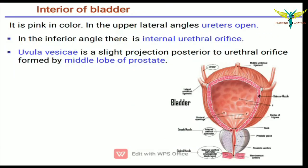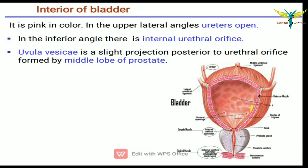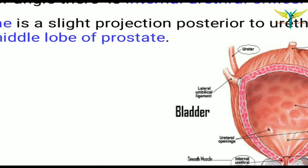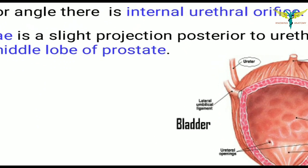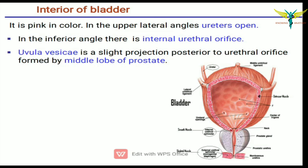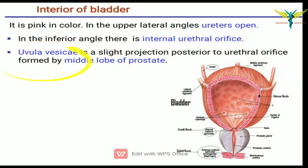The interior of the bladder is pink in color. In the upper lateral angles, the ureters open. In the inferior angle, there is an internal urethral orifice. The uvula vesicae is a slight projection posterior to the urethral orifice, which is formed by the middle lobe of the prostate.